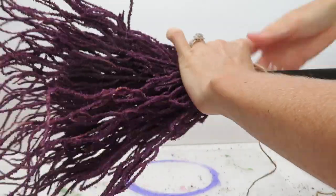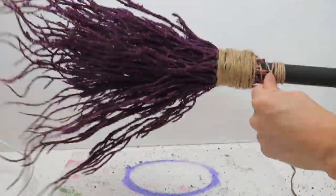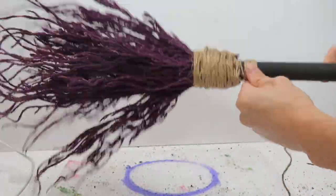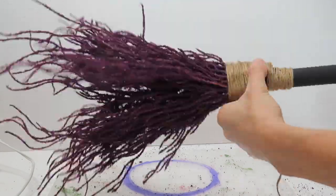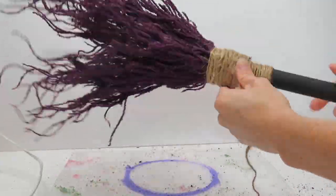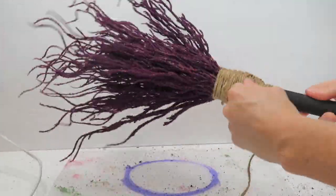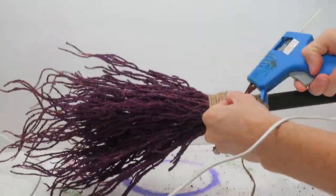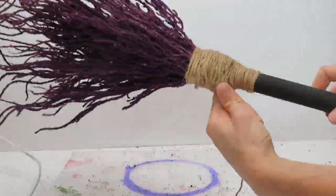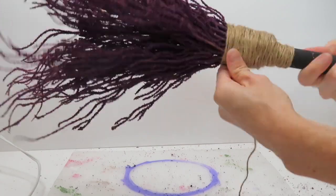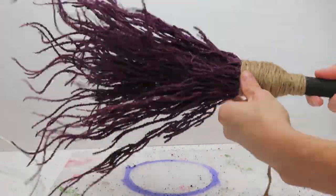This is the part where you're just going to start twisting. Thank God this is sped up because it took me forever. Just be prepared, it's going to take you a little while to wrap the twine around there. Also be sure to add some glue every once in a while to make sure your twine isn't going to unravel on you.